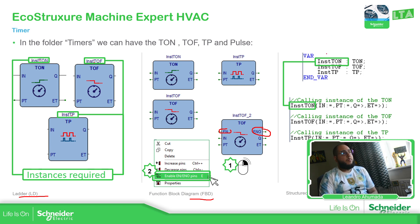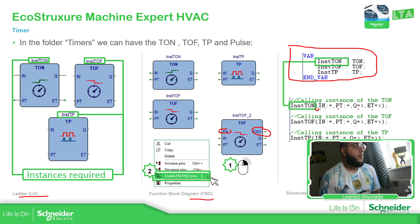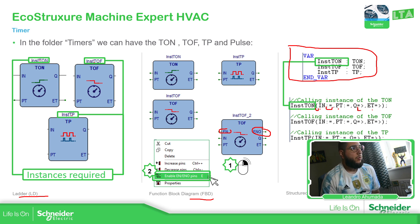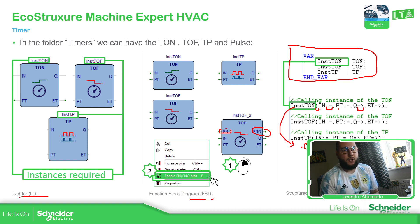For structured text it's a little bit different. What I recommend is to drag and drop into the local variables, then drag and drop that name into the code. You can type the parentheses to see all the different inputs and outputs. To define a variable into the input of the function block, use the colon and equal. For the output, use equal and then the arrow symbol. Another possibility is to use the name of the instance and then use the dot to access the output.